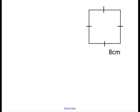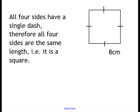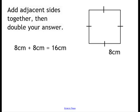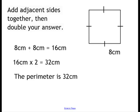Now with this shape, all sides have just got one dash on them. In other words, all four sides are the same length, so we must have a square. Our rule still works. Add adjacent sides together, then double your answer. So 8cm add 8cm is 16cm, double 16cm is 32cm, so the perimeter of our square is 32cm.